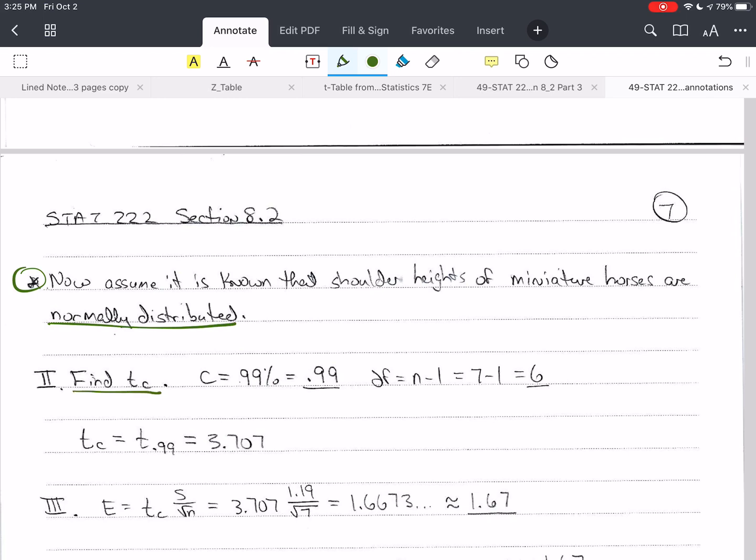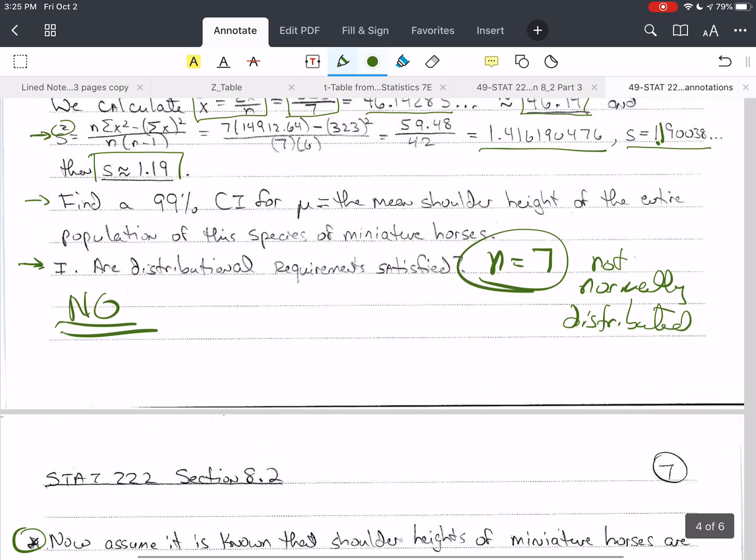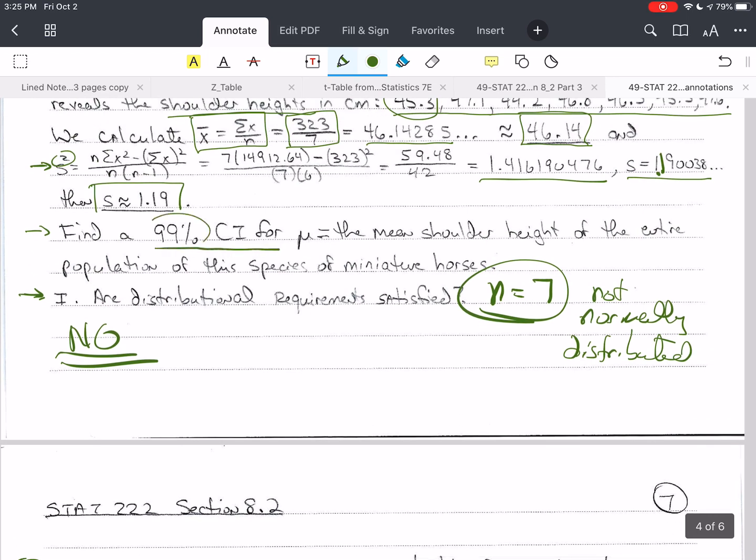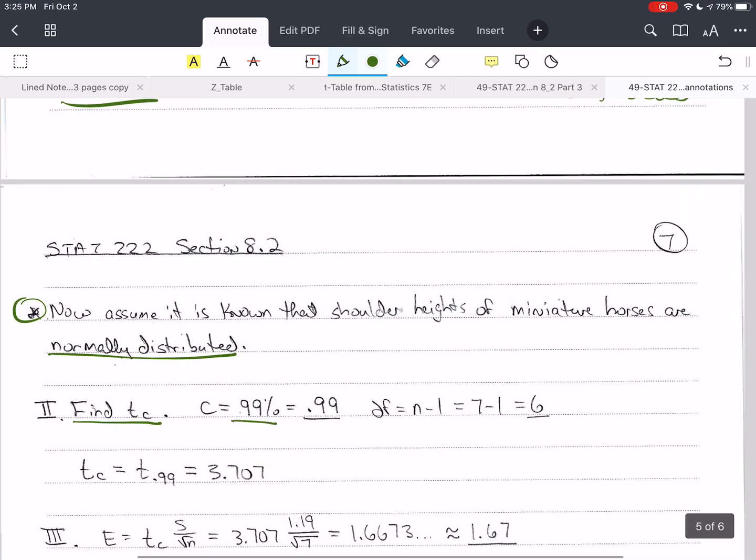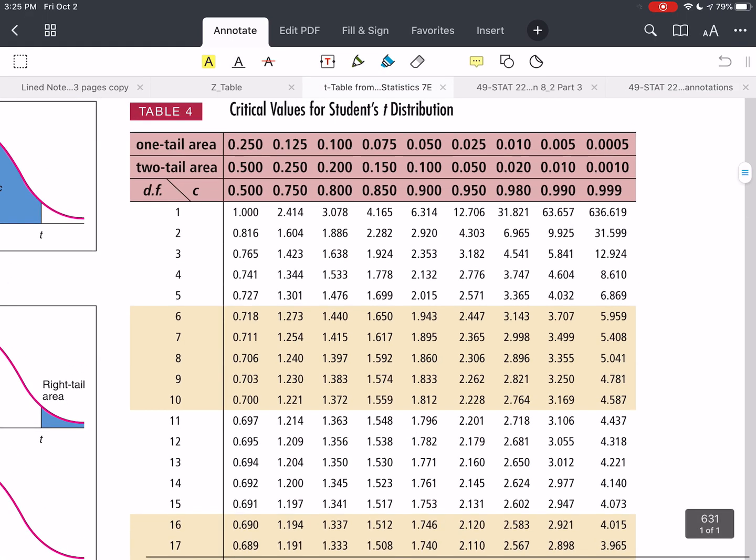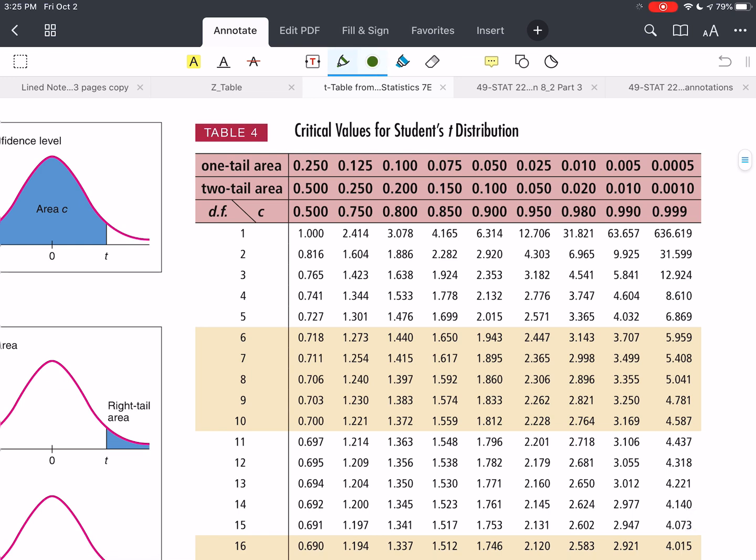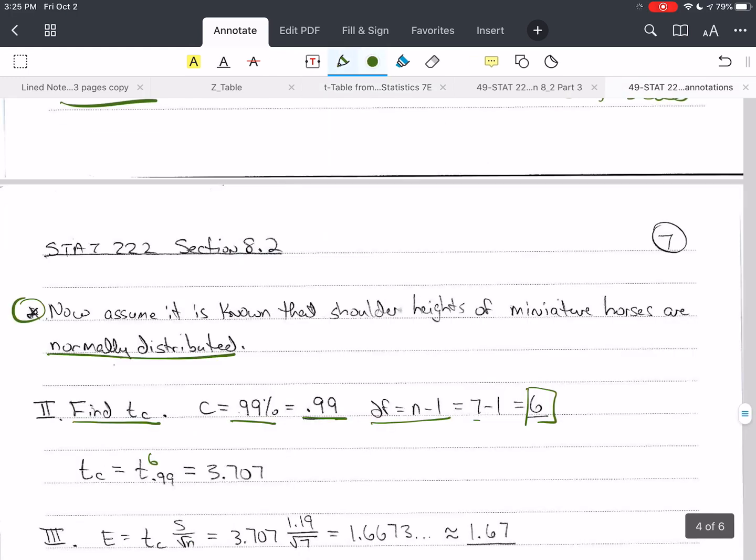The second step, I want to find t sub c. I have to figure out what c is. It says 99% confidence interval. This is c. The percentage in front of confidence interval is c. So 99% equals 0.99. Then I need my degrees of freedom. Degrees of freedom is n minus one. n was seven, so six are my degrees of freedom. I need t sub c equals t 0.99 with 6 degrees of freedom. I'm going to go to my t table and look for six degrees of freedom and 0.99. I've got 0.99 is here and six degrees of freedom. That is going to give me 3.707.